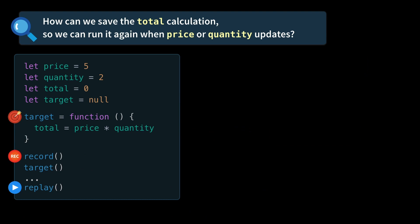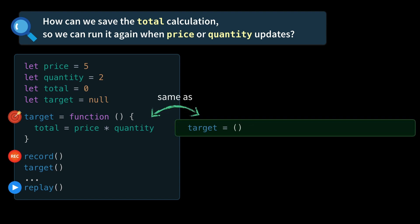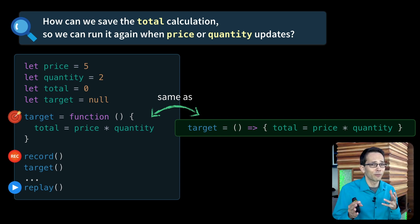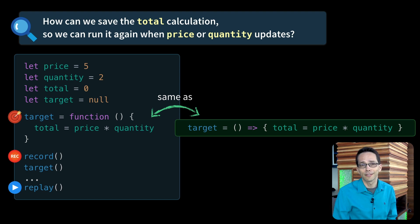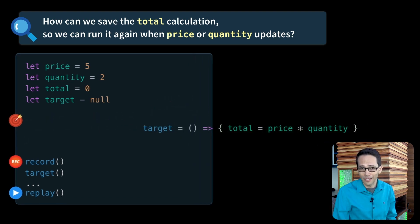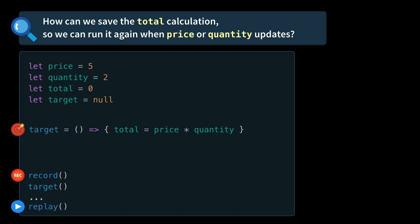This anonymous function that we're storing in target — there's another way we could write this using a more updated JavaScript syntax. We're going to be using that from now on. At one point in time I heard a blogger refer to this as the hipster syntax, so we'll use the hipster syntax. So the storage we were talking about, let's add that as a variable and make that an array, like you see here.